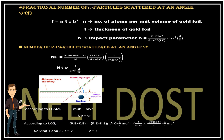Another subtopic is the fractional number of alpha particles scattered at an angle theta, represented by f. This topic is mainly needed for AIIMS, and since NEET and AIIMS are now considered a single exam, we should keep an eye on it. Remember this formula: f = ntπb², where f is the fractional number of alpha particles scattered at angle theta, n is the number of atoms per unit volume of gold foil, t is the thickness of gold foil, and b is the impact parameter: b = (z₁z₂e²)/(8πε₀ · KE · cos²(θ/2)).